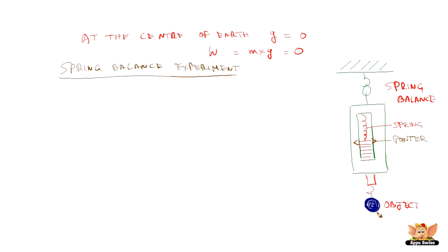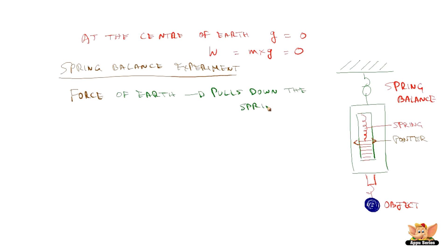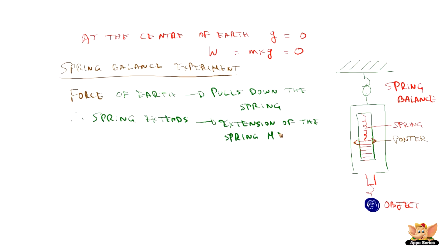An object of mass M is tied to the spring balance and the spring balance goes down because the spring gets extended. We can see how much the spring has extended using the measurements scaled on it. The extension of the spring depends on the force that pulls it down — the gravitational force of the Earth pulls down the spring, causing it to extend. This is a very simple experiment that shows how weight can be measured.